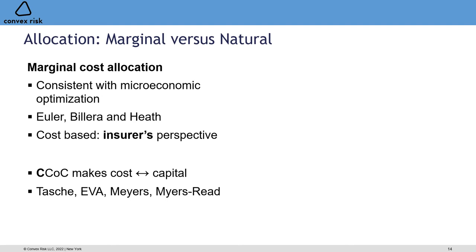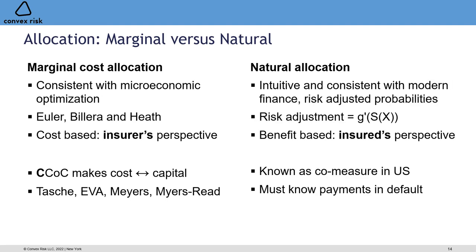With constant cost of capital, this leads to the Myers-Read and EVA/CAPM approaches to pricing with capital allocation. On the other hand, the natural allocation is intuitive and consistent with modern finance: it works through risk-adjusted probabilities given by g'(S(X)), applied to the actual cash flows the insured receives. It's benefit-based and takes the insured's perspective. In the US this is sometimes known as the co-measure approach. To compute it for a limited liability insurance company, you must know the payments in default, because you apply the functional to actual amounts each insured achieves.